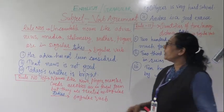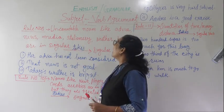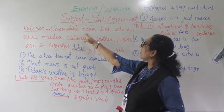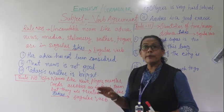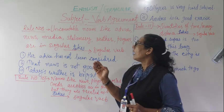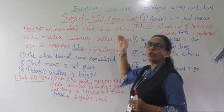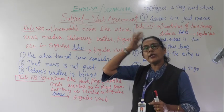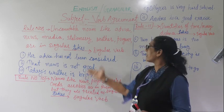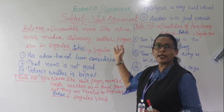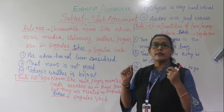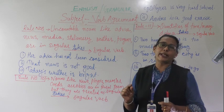Now we go to rule number nine. Uncountable nouns — nouns we cannot count in numbers — like 'advice,' 'news,' 'media,' 'stationery,' 'weather,' 'progress' — these nouns are always in singular. They are always treated as singular.